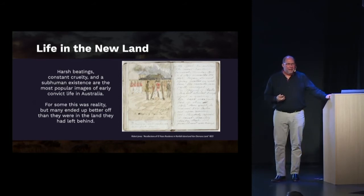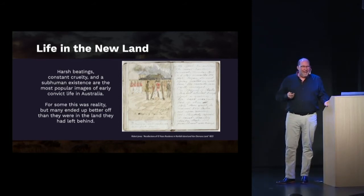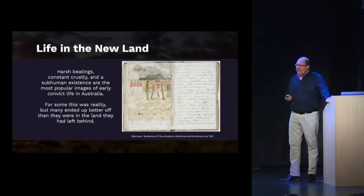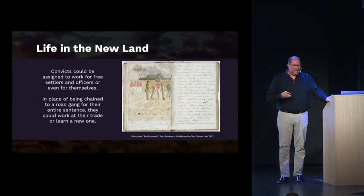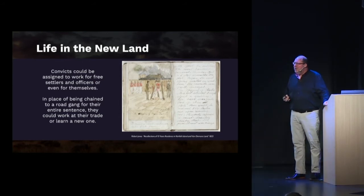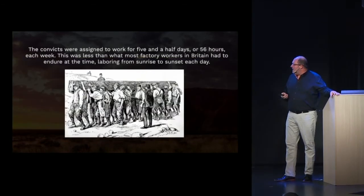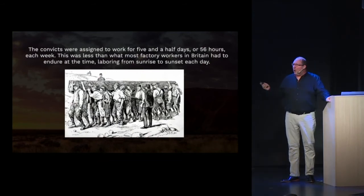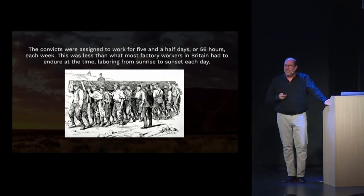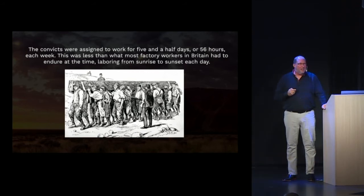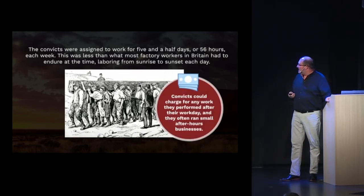People have written about harsh beatings and constant cruelty. However, for many who arrived in Australia, the land and the treatment they received was far better than the land they had left behind. Convicts were sometimes assigned to work for free, but those not sent for very criminal purposes could work for themselves, were never chained, could work for people they liked, and could even learn a new trade. They were assigned to work five and a half days — 56 hours each week — which was actually less than the majority of British working class, who worked from sunrise to sunset.